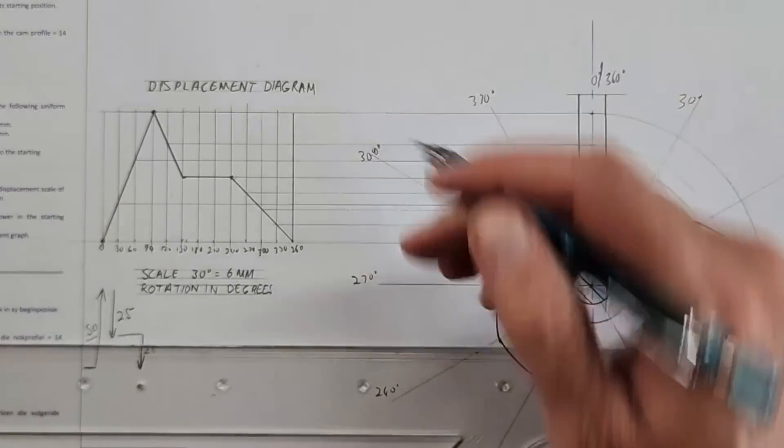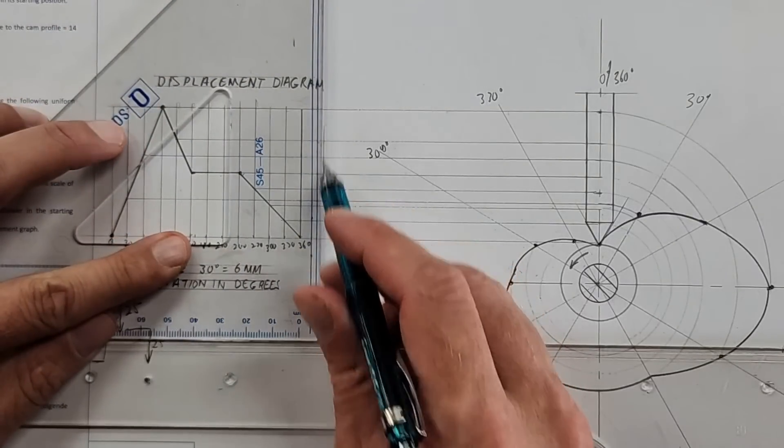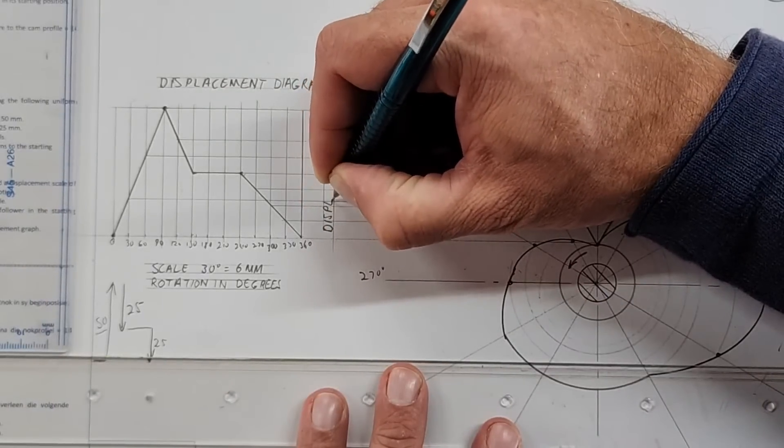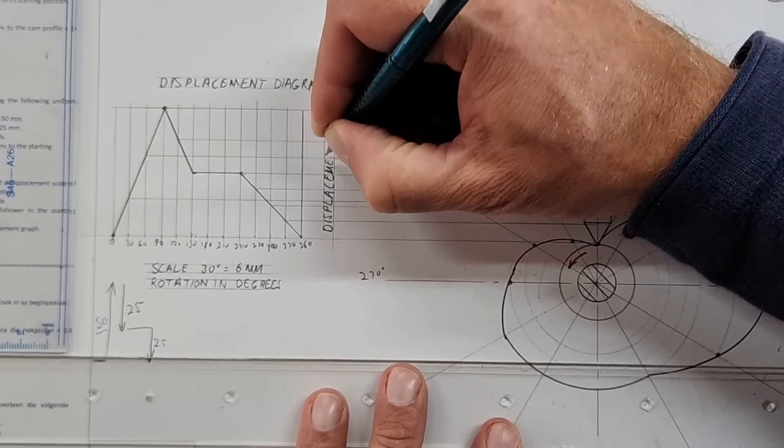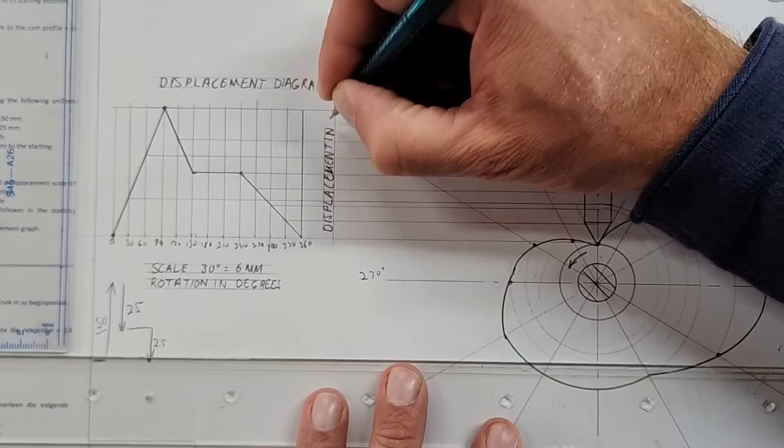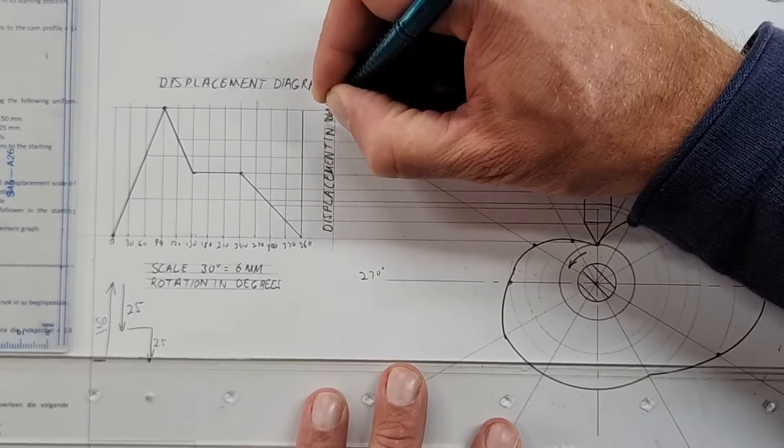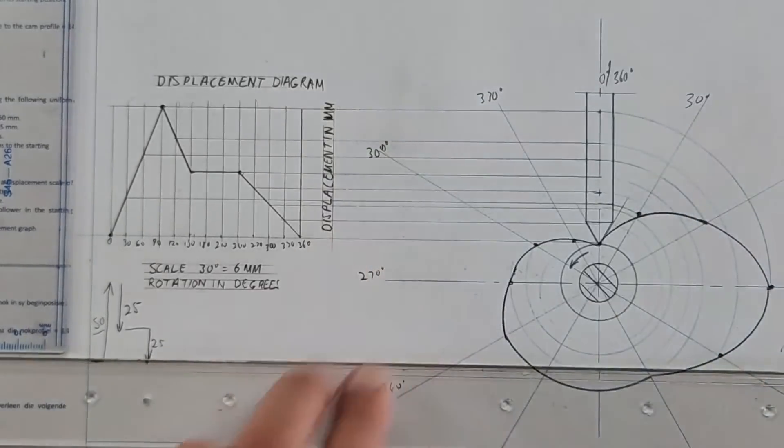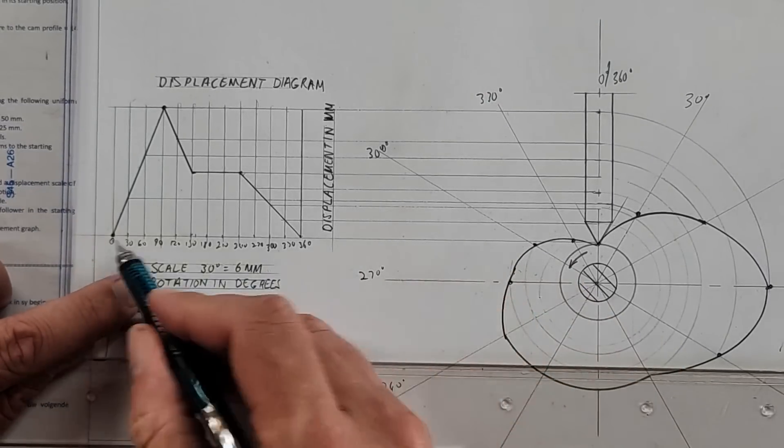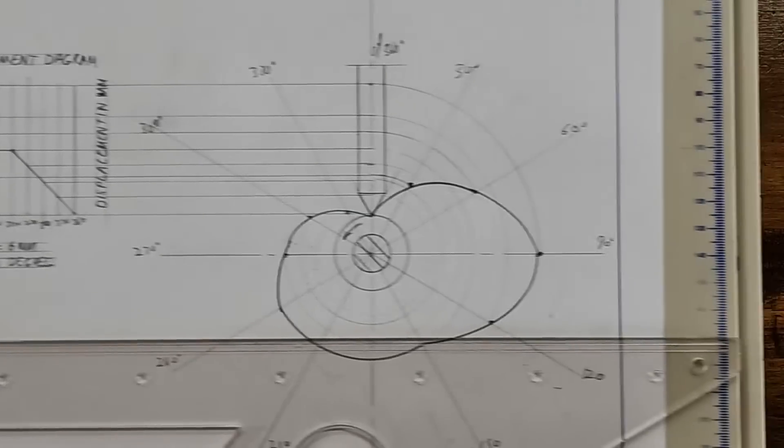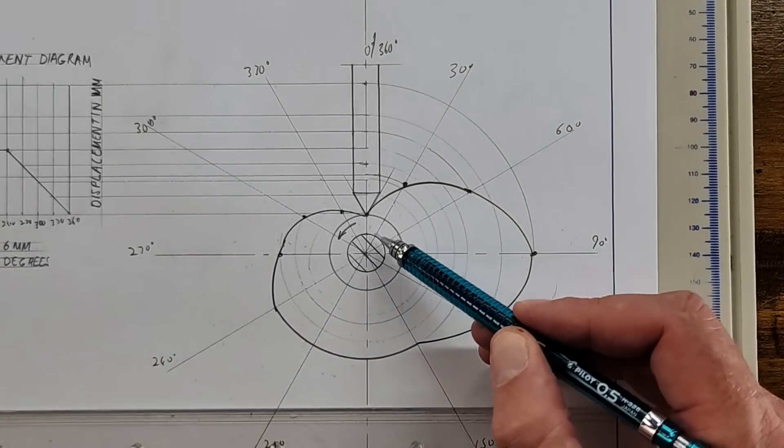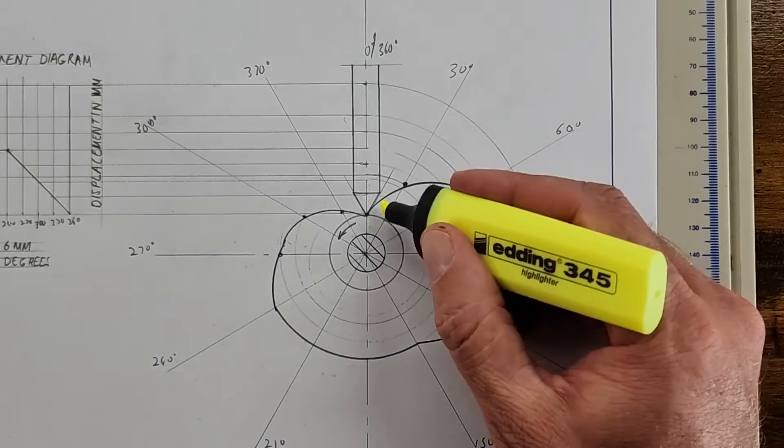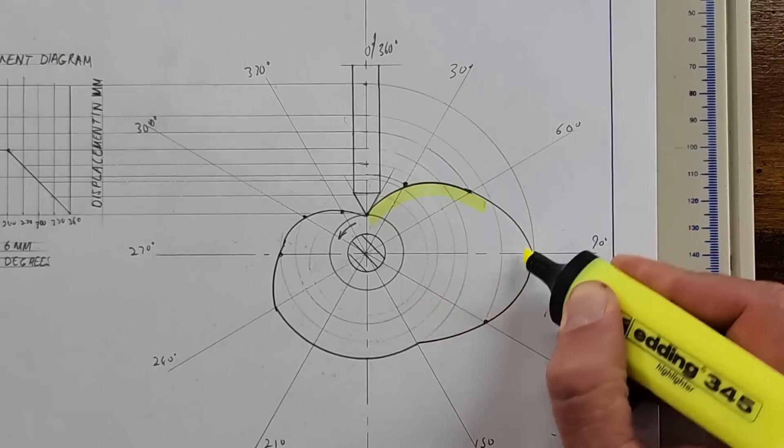This vertical axis - that is your displacement in millimeters. Displacement in millimeters. All right, displacement in millimeters - that's our total displacement. And then scale 30 degrees 6 millimeters, rotation is in degrees, it's called the displacement diagram. Here make sure that you have your camshaft, your minimum distance indicated, your direction of rotation, your follower, and that you've numbered zero to 360. Let me just help us see and draw this follower or the cam profile with the highlighter.